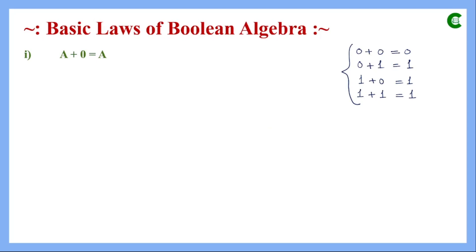For the first basic law, a is a Boolean variable so it can have two values: 0 and 1. If the value of a is 0, then 0+0=0. If the value of a is 1, then 1+0=1. Whatever the value of a — 0 or 1 — that value is replicated in the result. That's why the result is written as a.